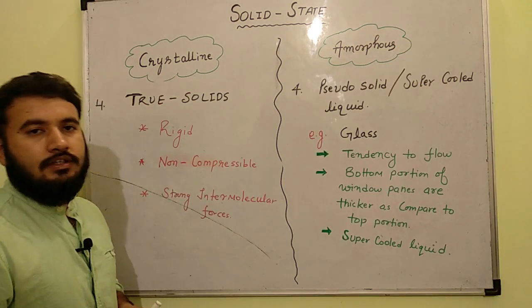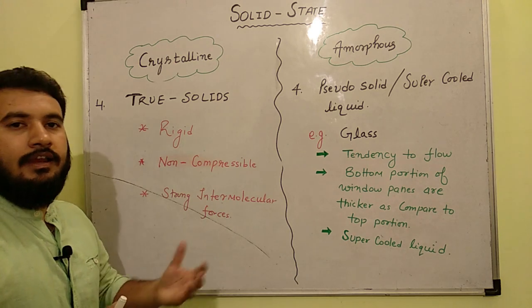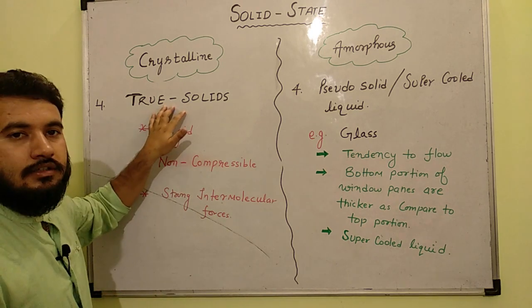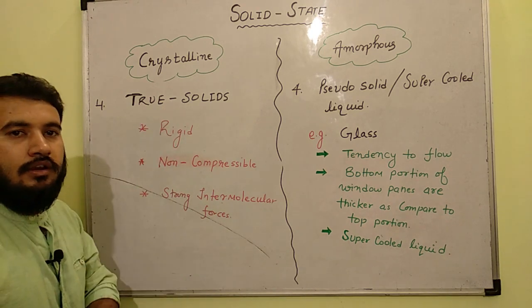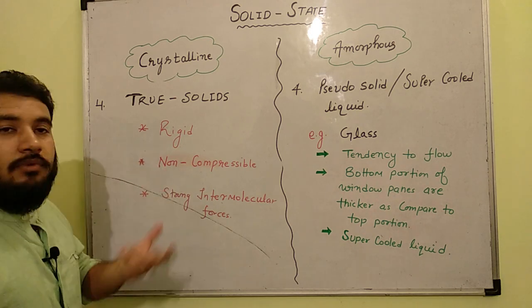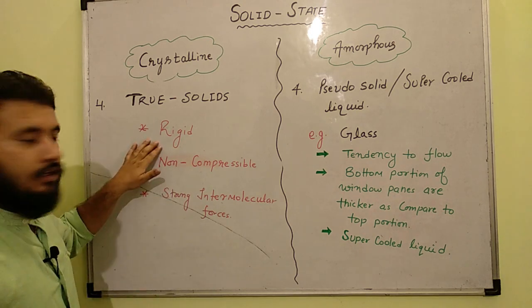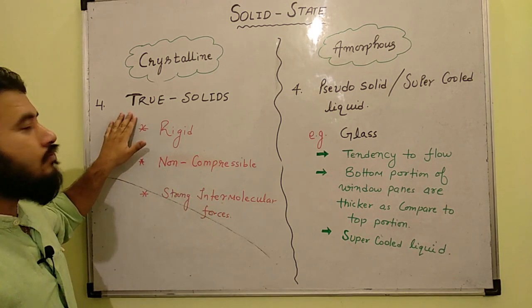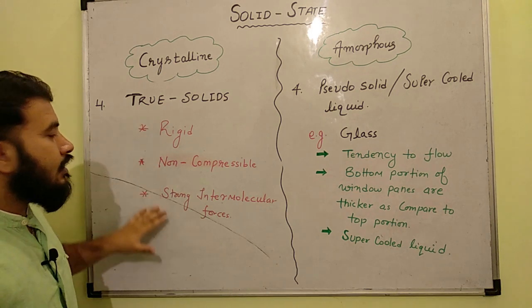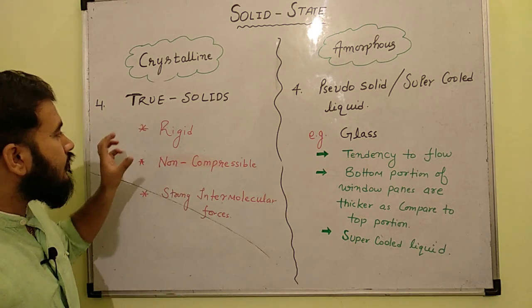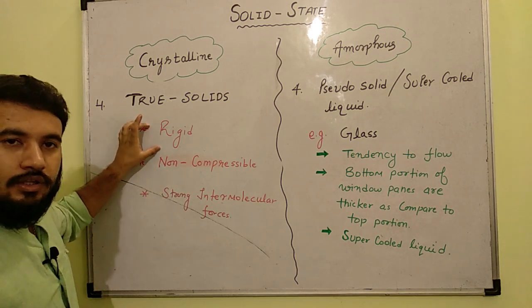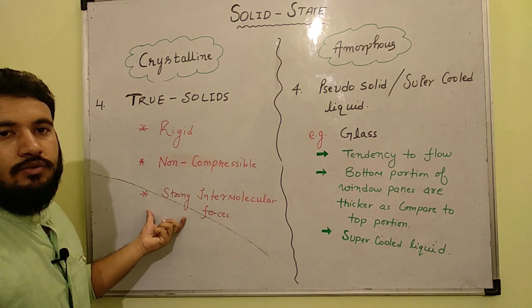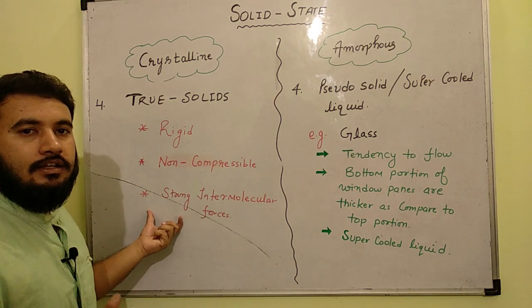So now let's move towards the fourth and final property of crystalline and amorphous solids. So basically crystalline solids are true solids. Now as we know that for a true solid, the most important properties are like that they are rigidity, non-compressible nature and strong intermolecular forces. And in case of true solids, all these properties are strictly followed. So true solids are rigid, non-compressible, strong intermolecular forces are working. For example, in case of NaCl, rock salt.